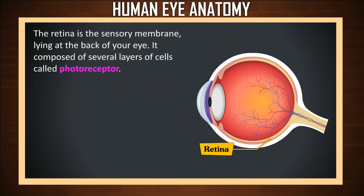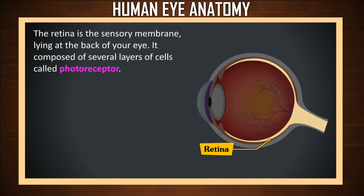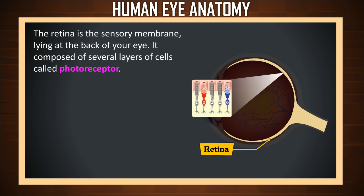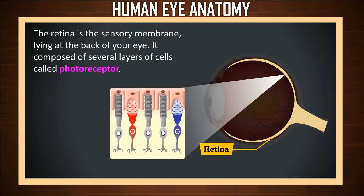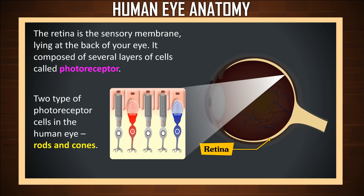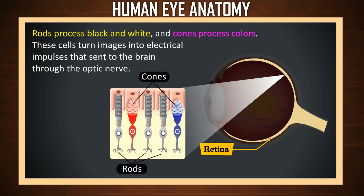Retina. The retina is the sensory membrane lying at the back of your eye. It is composed of several layers of cells called photoreceptors. There are two types of photoreceptors in the eye: rods and cones. Rods process black and white, whereas cones process colors. These cells turn images into electrical impulses that are sent to the brain through the optic nerve.